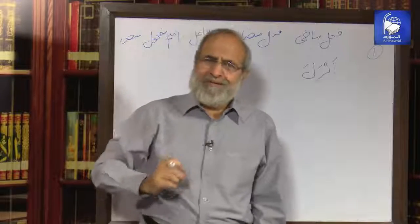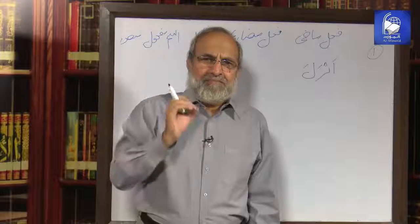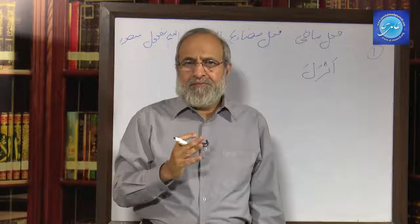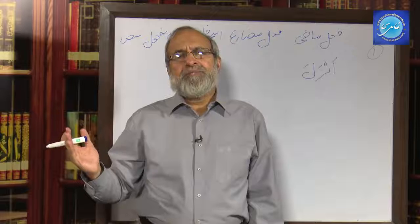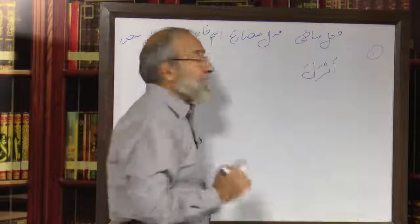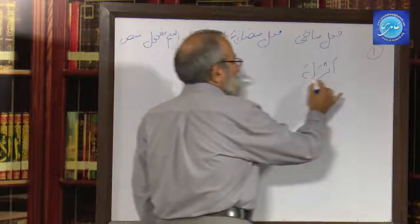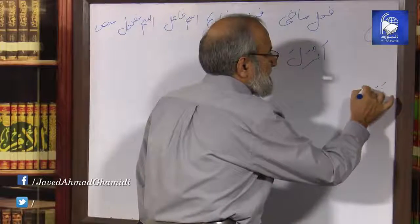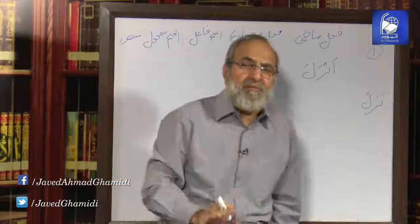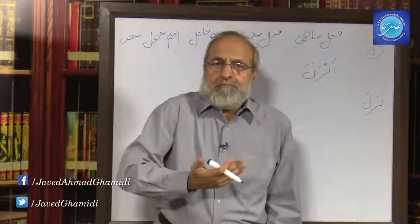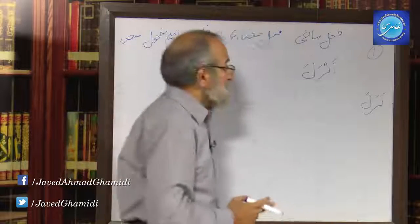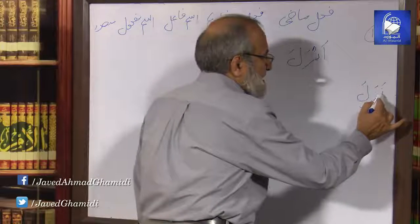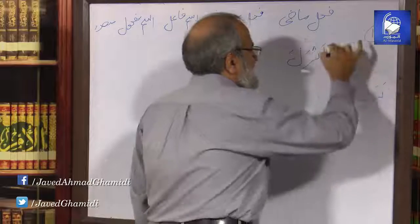Anzala, like Dharaba or Qatala, is Madhi (past), Wahid (singular), Muzakkar (masculine), and third person Ghaib. And yet it has four letters, not three. Had it been Nazala — which certainly is another Arabic word — it would be like any familiar verb like Dharaba or Qatala. But in Arabic you also have Anzala. Anzala is essentially Nun-Zay-Laam, but with the addition of an Alif — Mazid Fi.